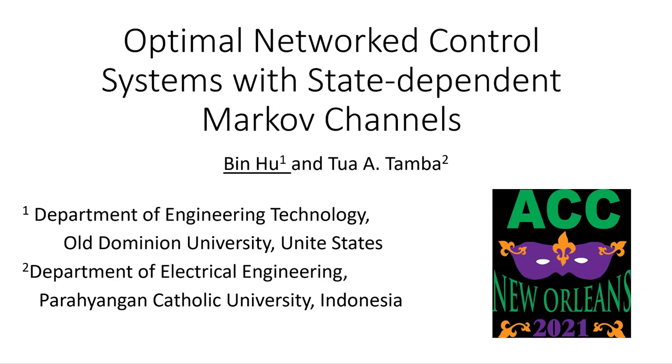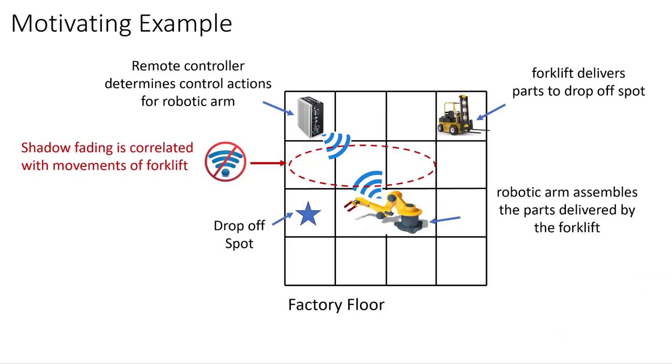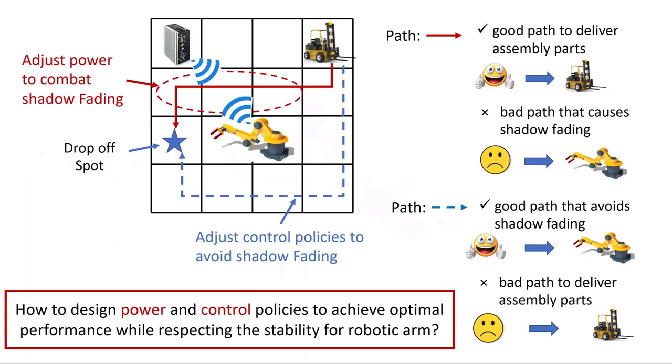Hi everyone, my name is Bing Hu and I'm an assistant professor at Old Dominion University. The work that I present today is about how to design optimal network control system for industrial process over state-dependent Markov channels. This is the work that I did with Dr. Tua Tamba from Indonesia. Let's use a simple example to motivate our research work. Consider a manufacturing setting: a forklift transports raw parts to a drop-off spot. A robotic arm is remotely controlled over a wireless communication channel to pick up and assemble the parts. As these two systems coexist in the same environment, the forklift's movements may block the radio signal from a wireless network and therefore lead to shadow fading.